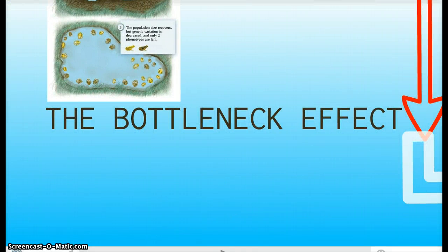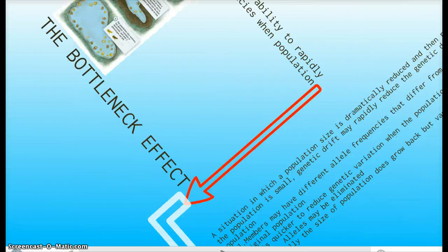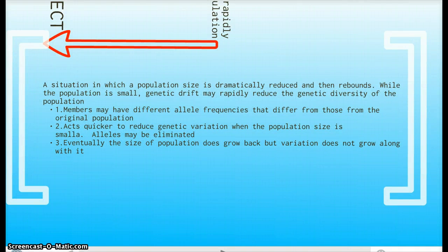Let's talk about one phenomenon where genetic drift occurs. The bottleneck effect. What exactly is the bottleneck effect? The bottleneck effect is a situation in which a population size is dramatically reduced and then rebounds.